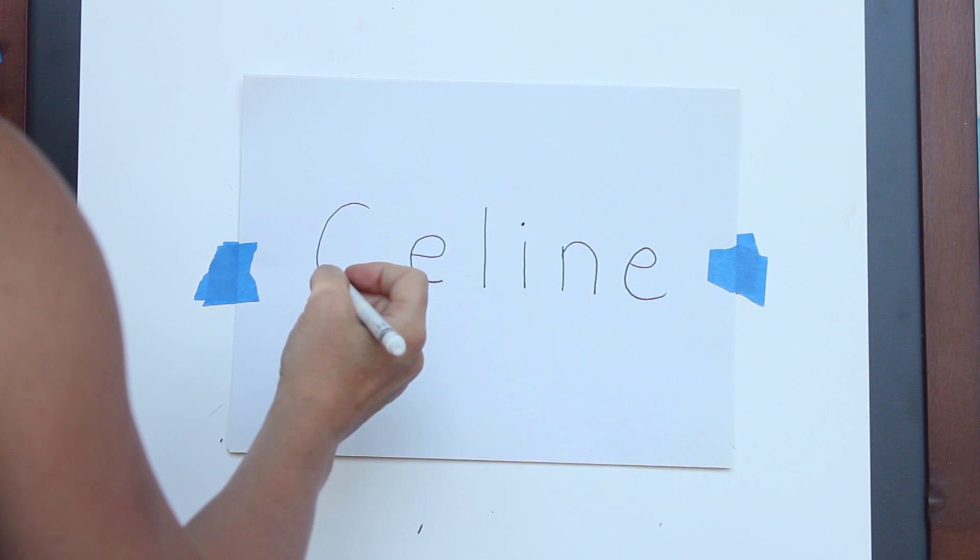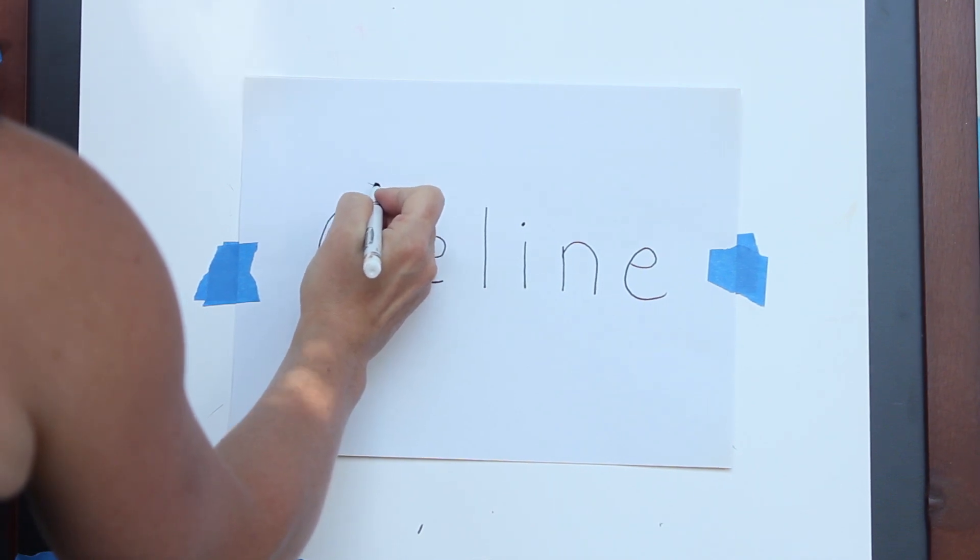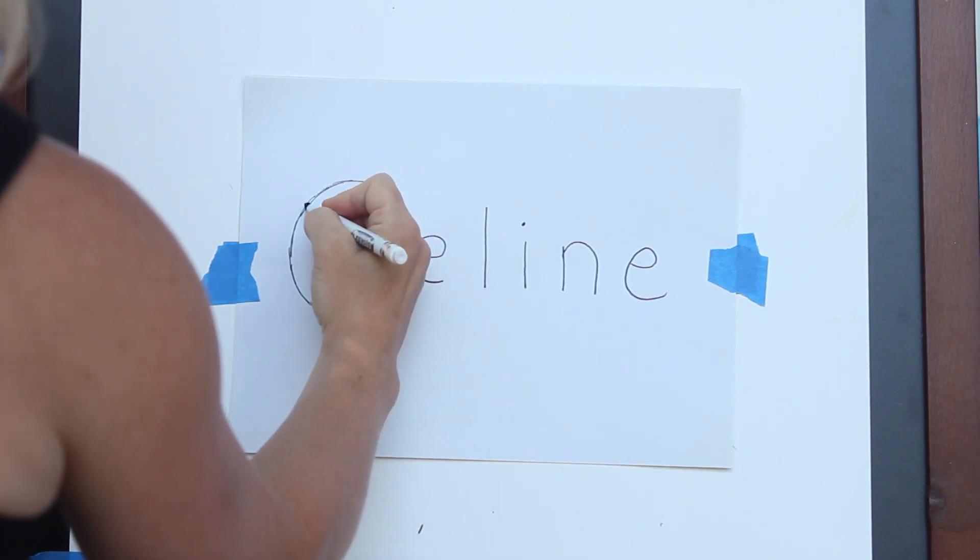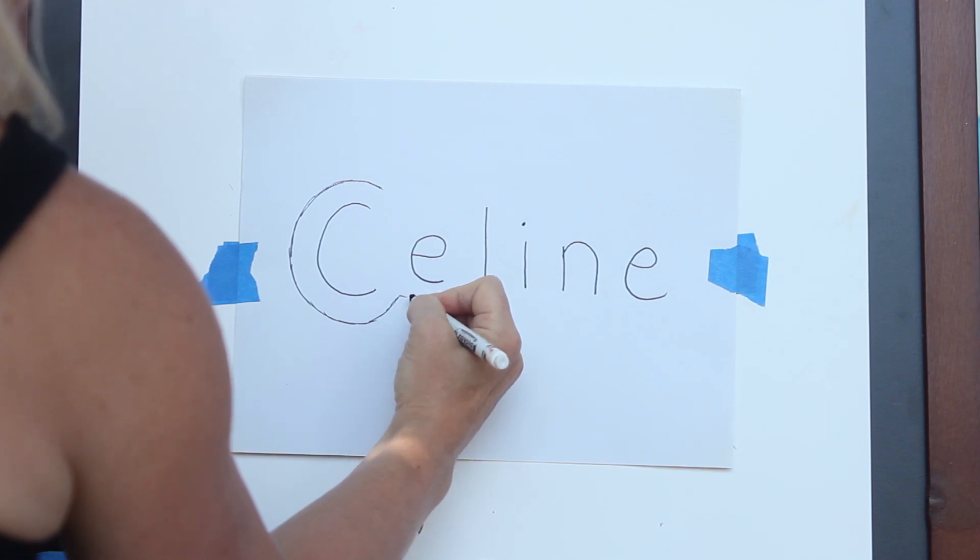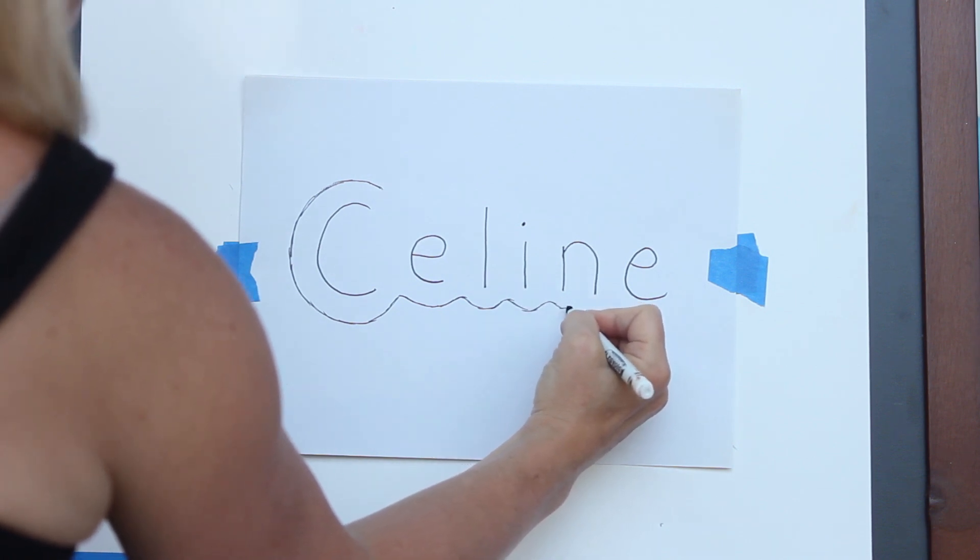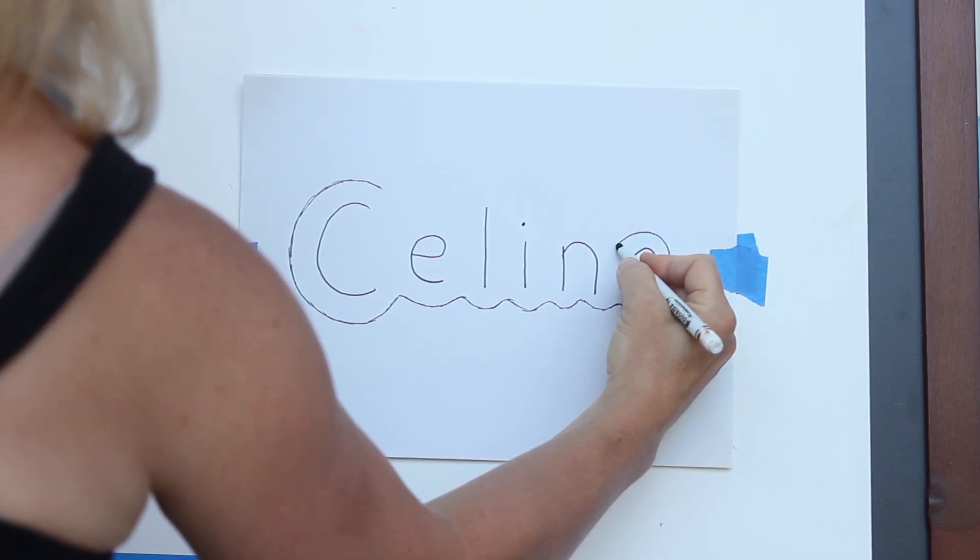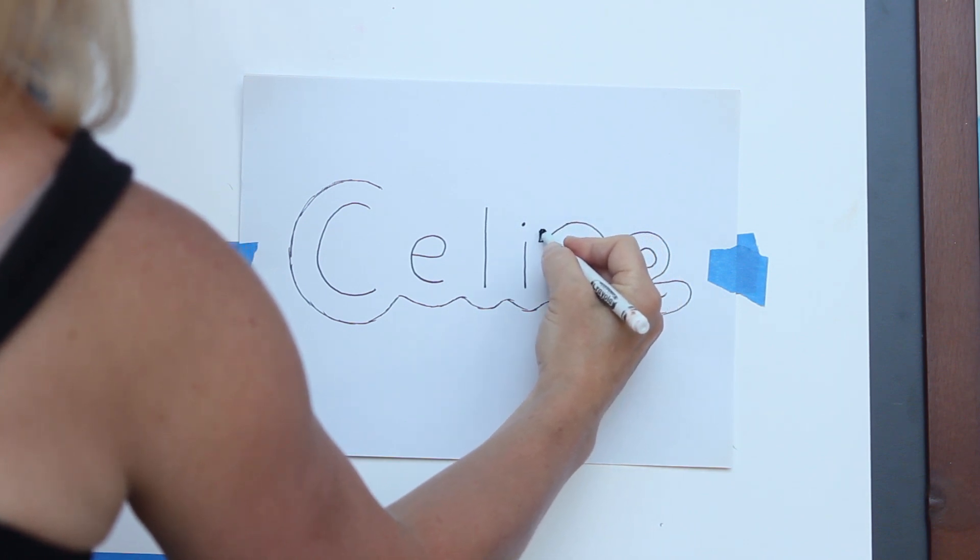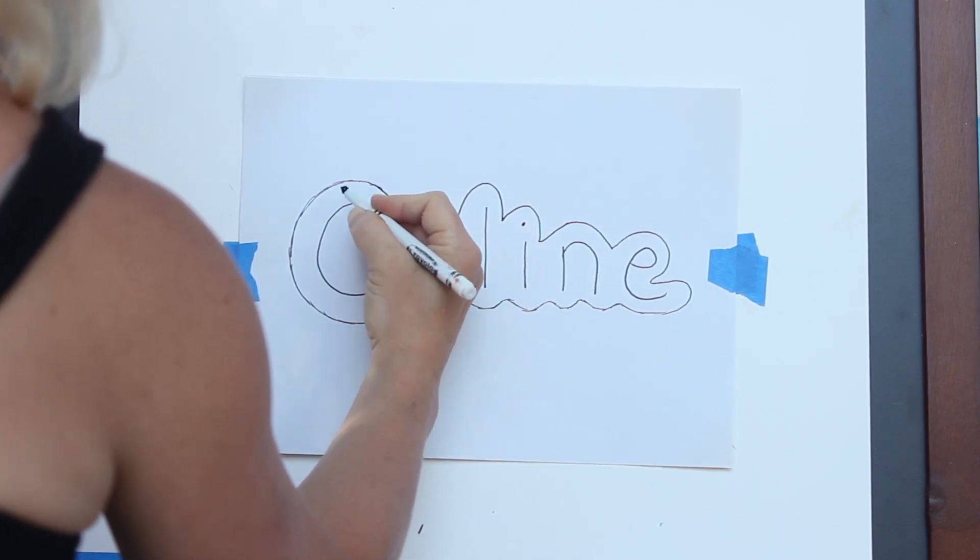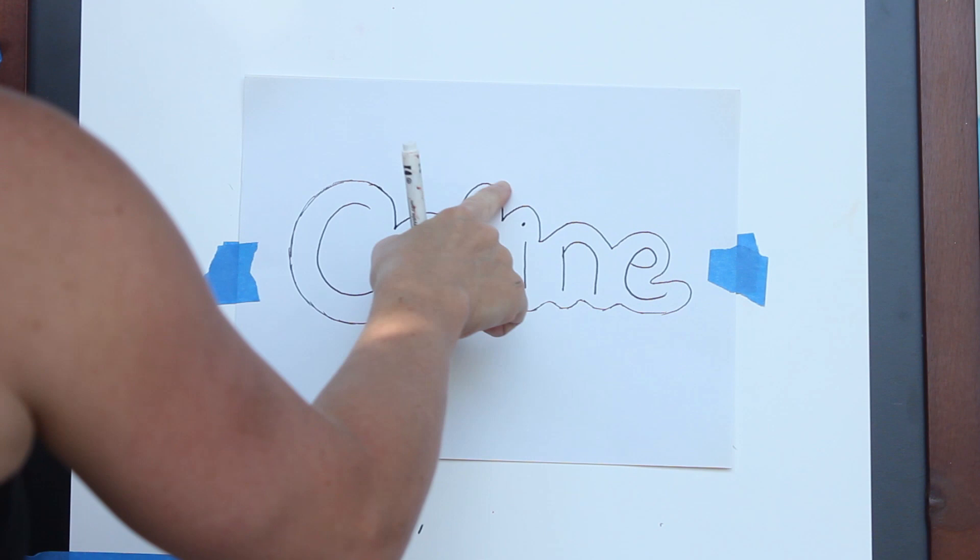Now what I want you to do is take your pencil and we're going to make a static shape, which just means that it's going to look like it's not moving. It's going to be static. So you're going to trace around the shape of your name. Just trace around it, kind of goes up and down. Now we have that static shape around our name.